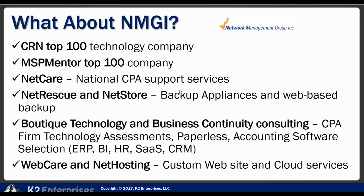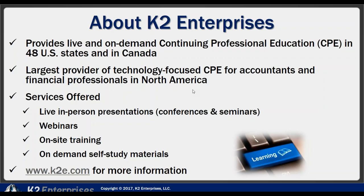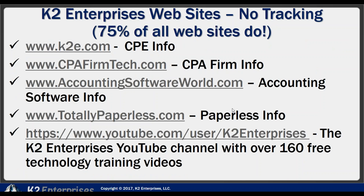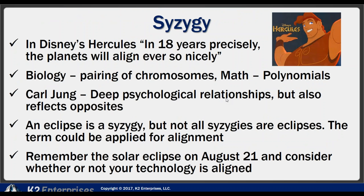The basis of the facts in this presentation come from my NMGI company, which supports businesses from Boston to Honolulu 24/7, and my K2 company. For references, we have additional CPE-basis websites — no tracking in those sites, just summaries of products and guidance. For each area of CPA firm technology, accounting software, or paperless, we run individual sites. You might recall that later this year on August 21st there's going to be an eclipse — 'syzygy' is the technical name for that. An eclipse is a syzygy, but not all syzygies are eclipses. What I'm trying to get you to do is think about your technology alignment.